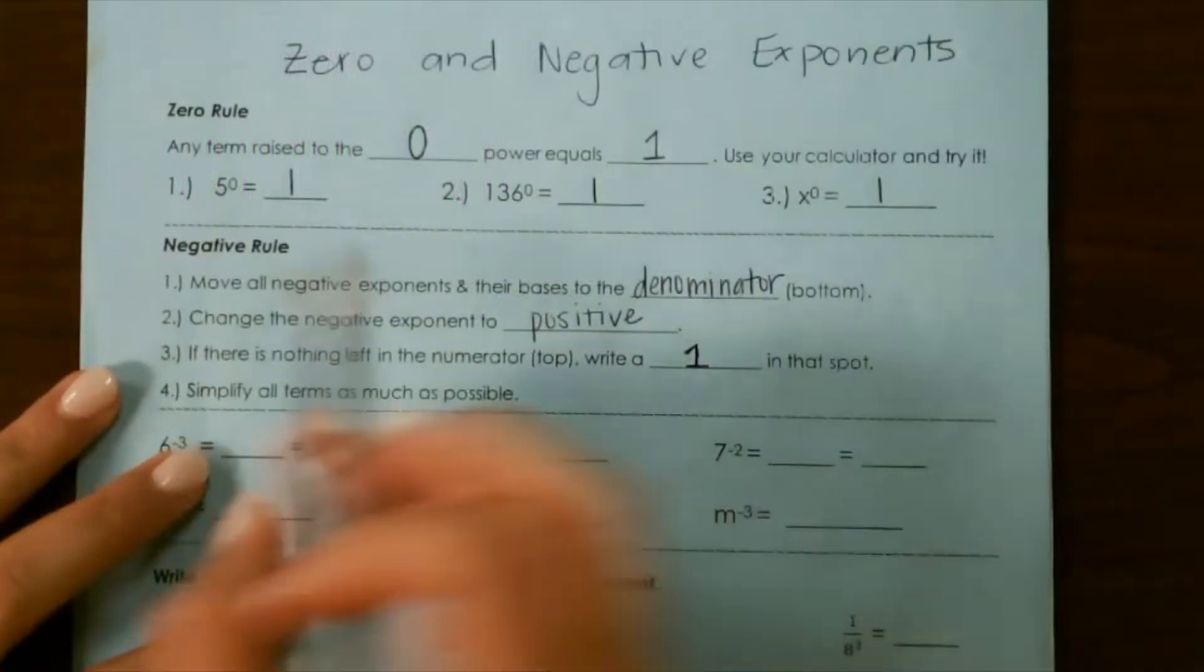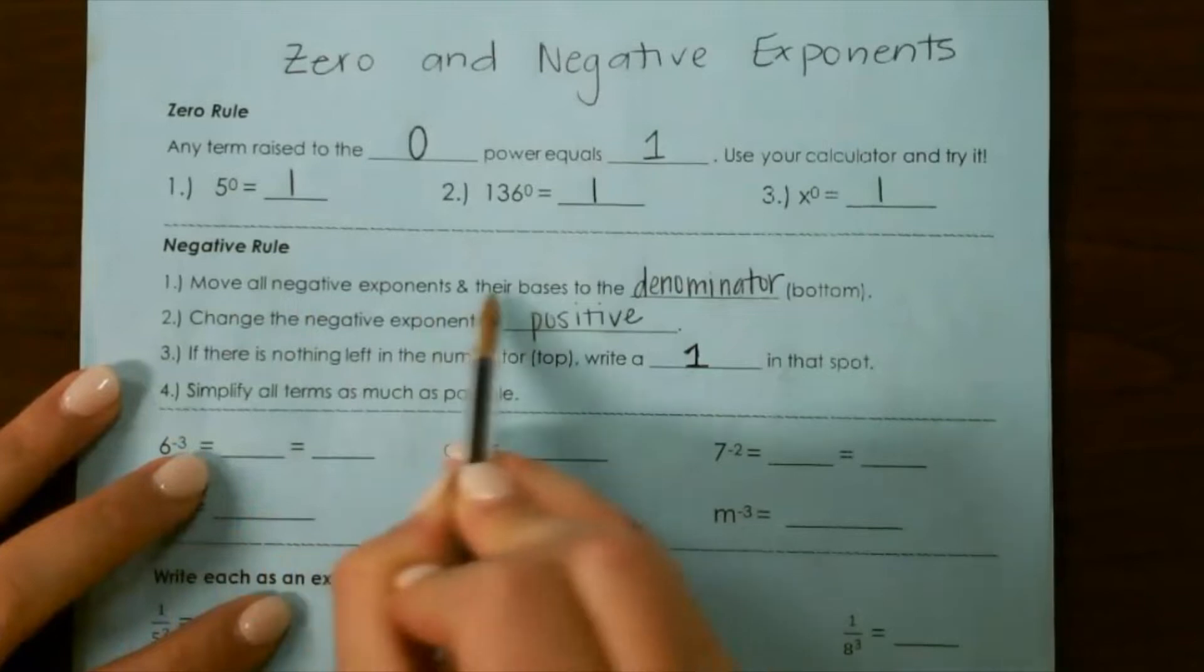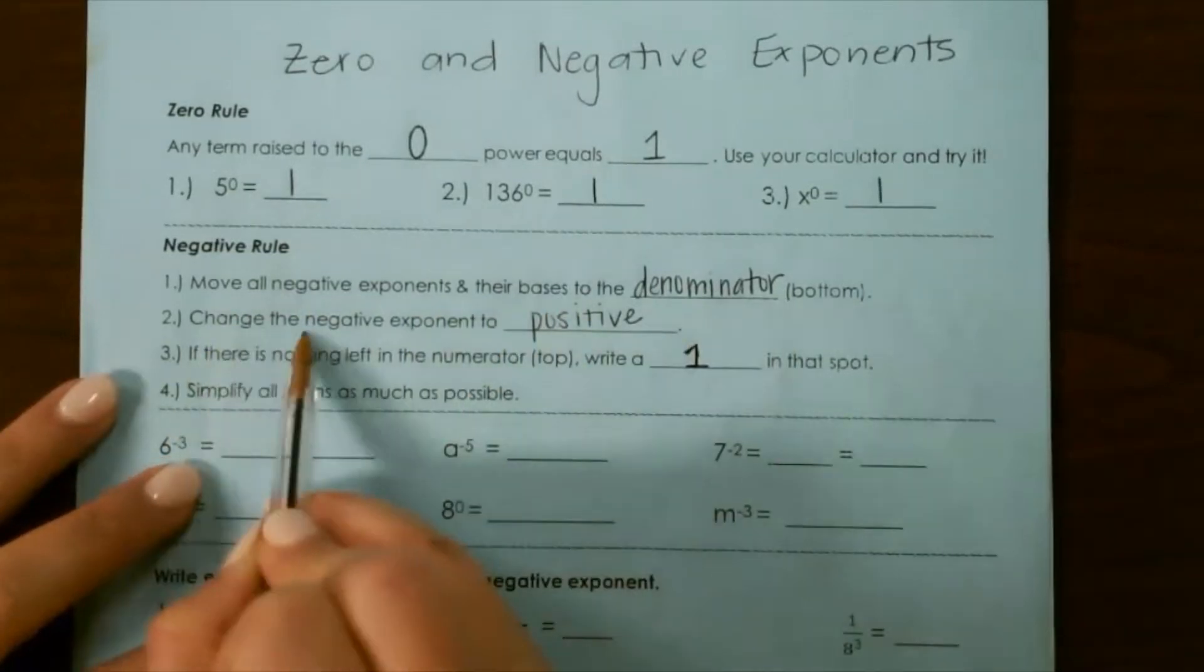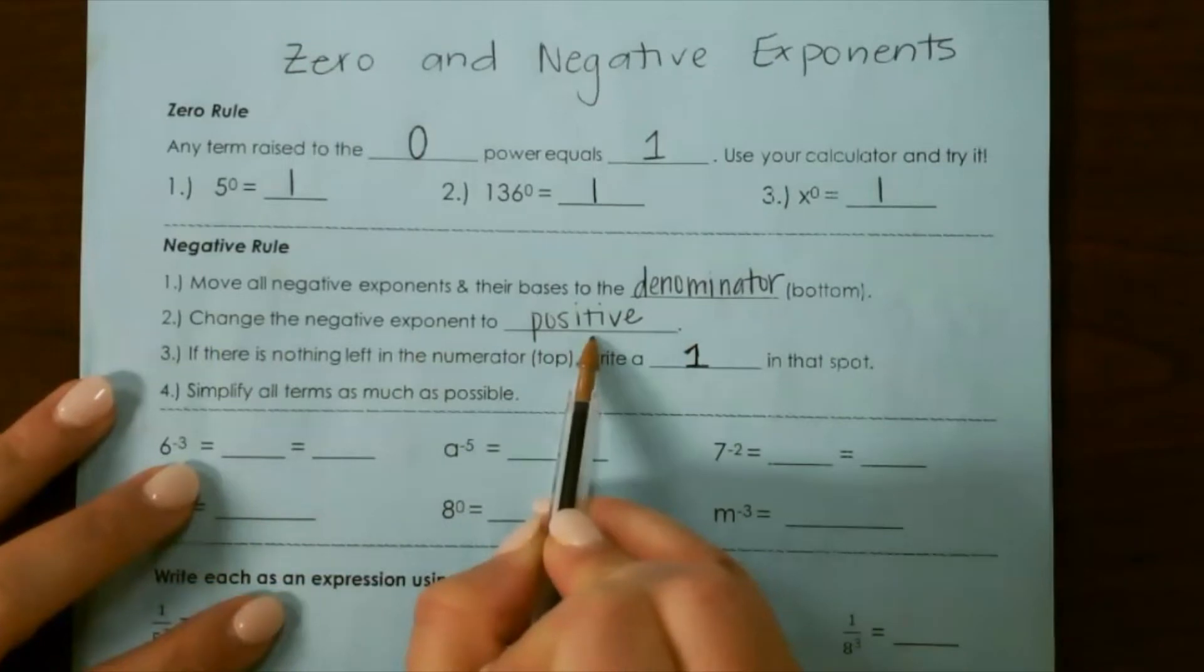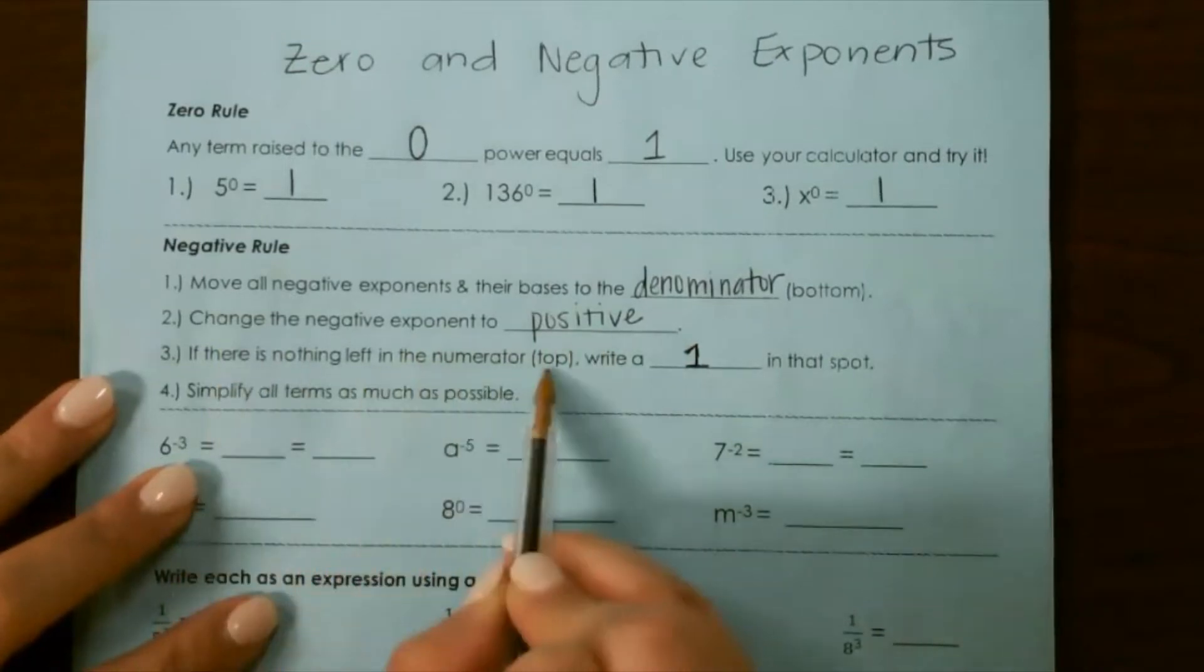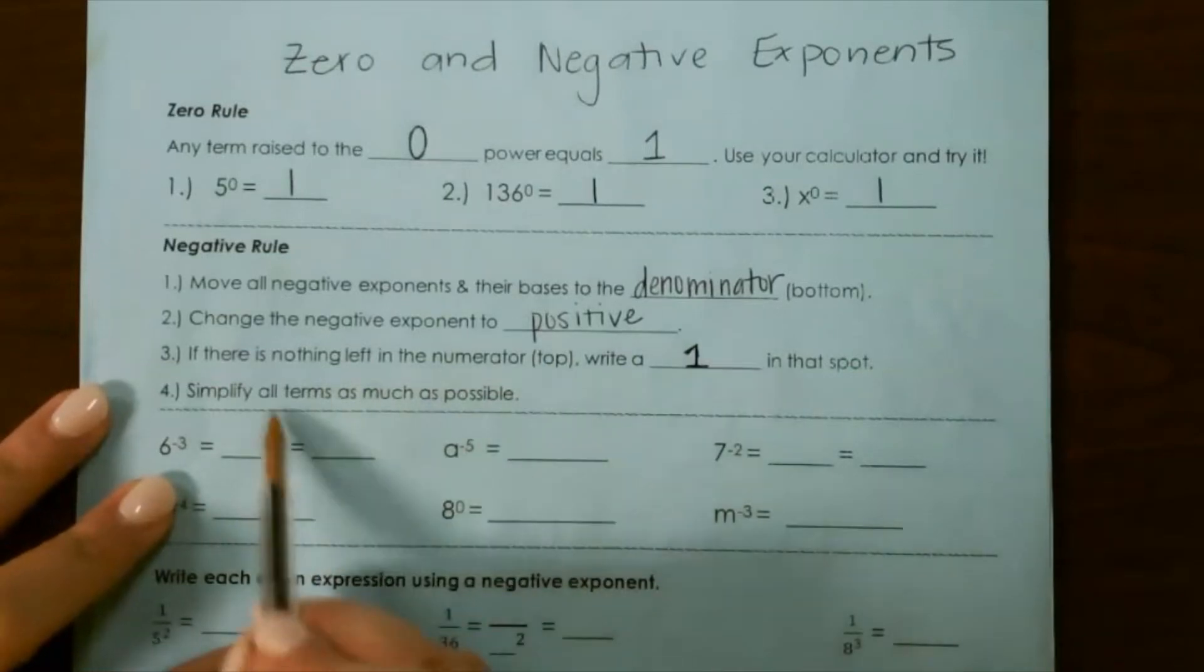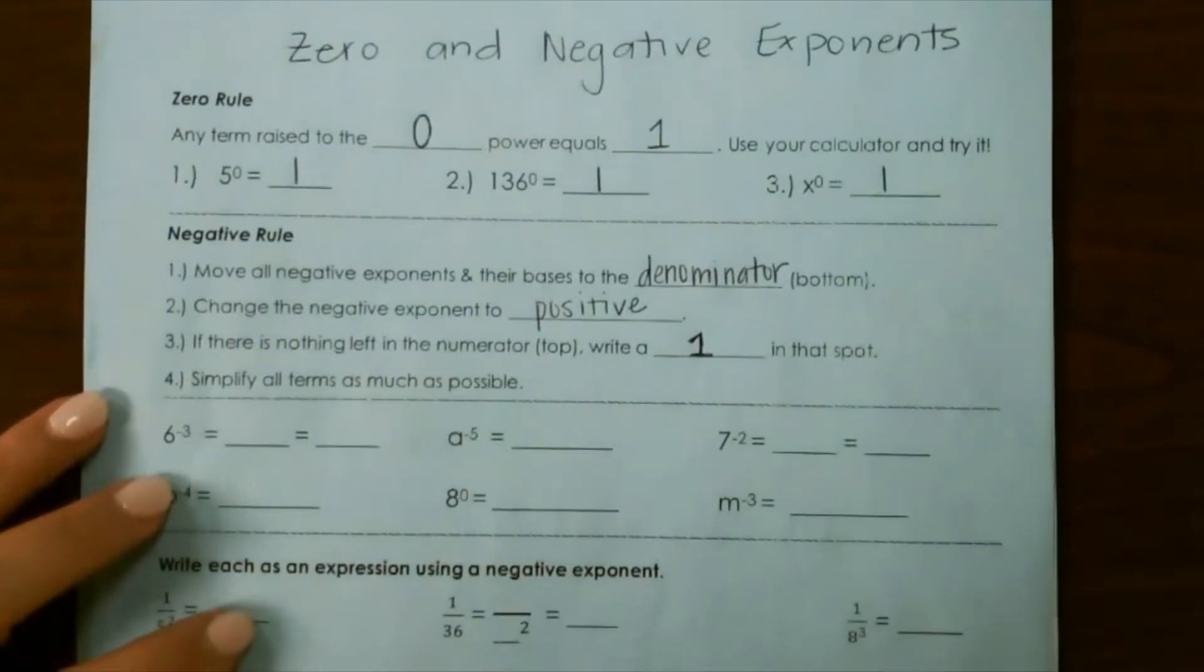Now for negative exponents. You move all negative exponents and their base to the denominator or the bottom. You change the negative exponent to positive. If there is nothing left in the numerator or on the top, you write a 1 in that spot, and then simplify all the terms as much as possible.